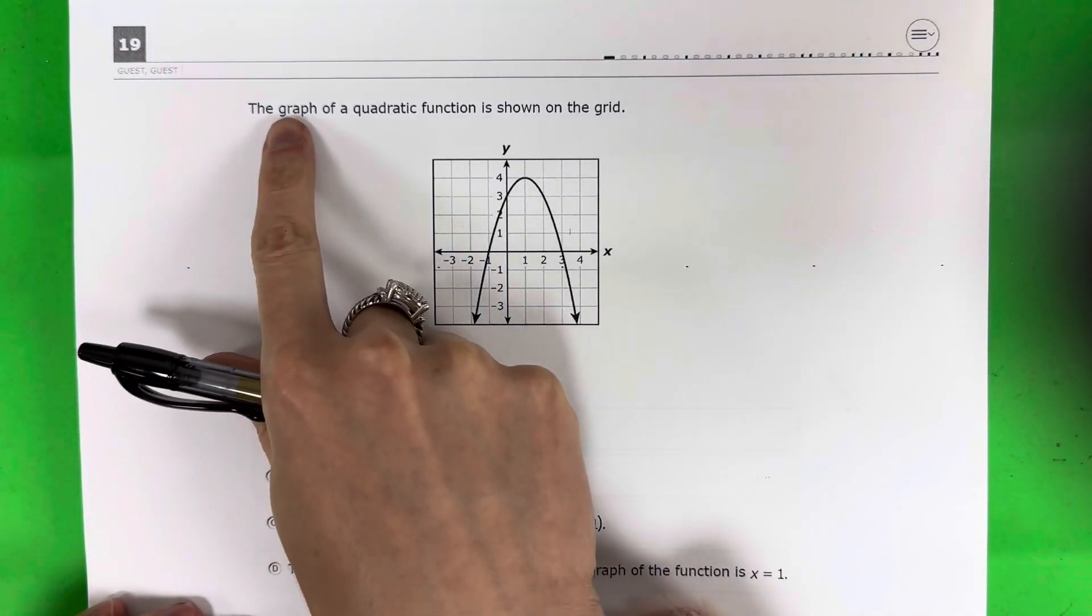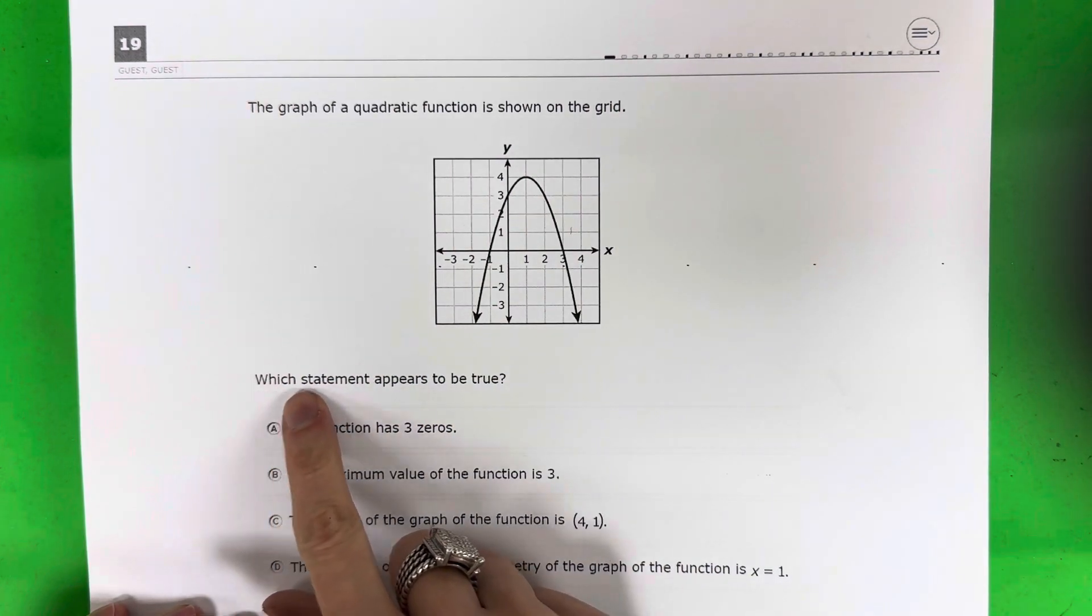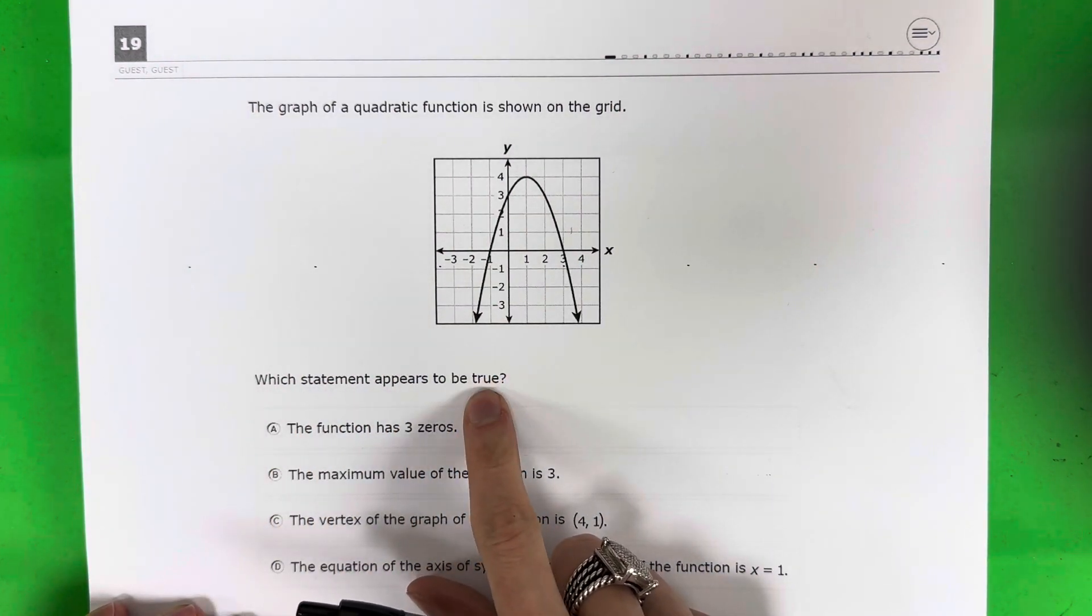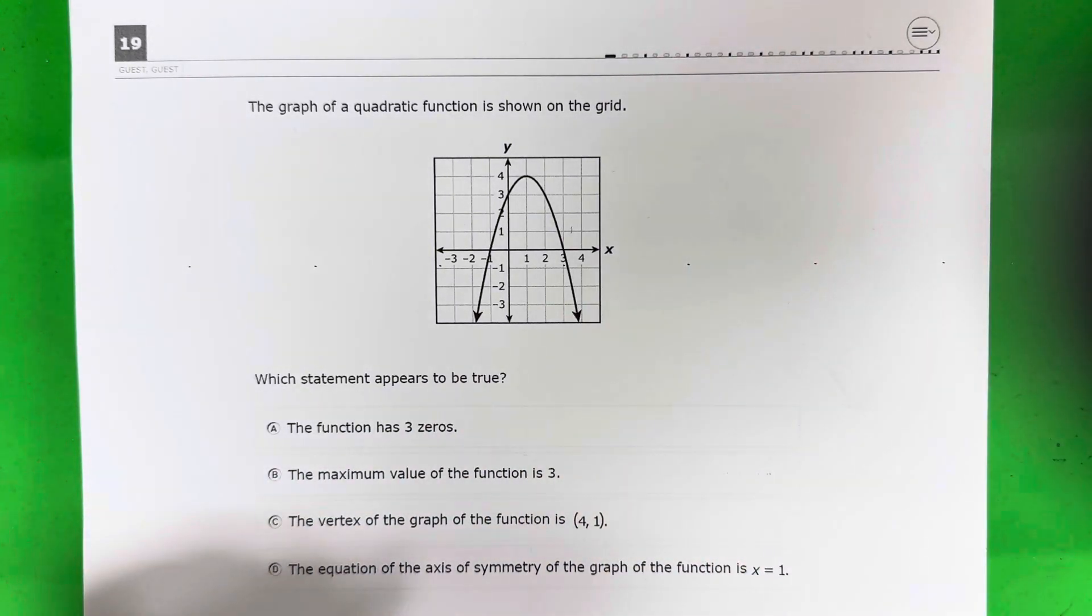Question 19. The graph of a quadratic function is shown on the grid. Which statement appears to be true? So I want to see which one is correct. Alright, let's take a look at each one, one by one.